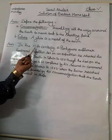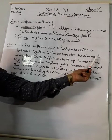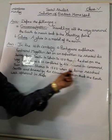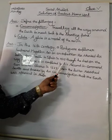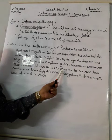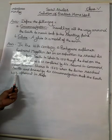In the 16th century, a Portuguese sailor and explorer Ferdinand Magellan set on an expedition. He started his journey from Seville in Spain in 1519. Though he died on the way, his voyage was completed by his second in command, Juan Sebastian Elcano, in 1522. When the latter reached Seville, it proved by his circumnavigation that the earth was spherical in shape.